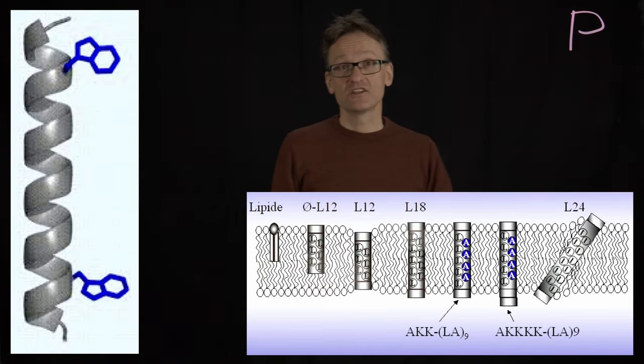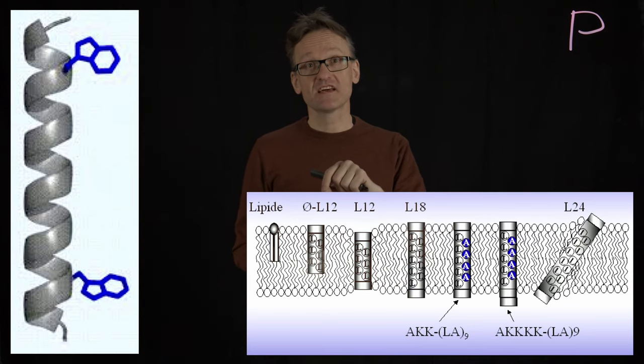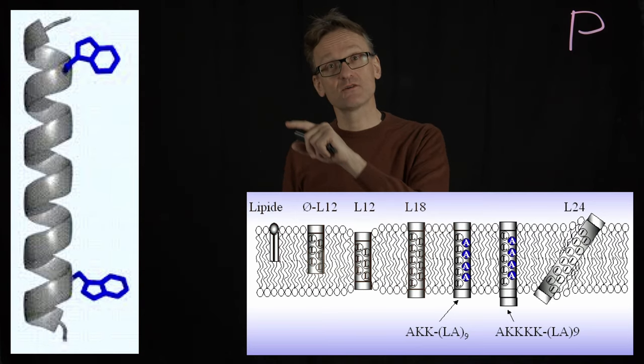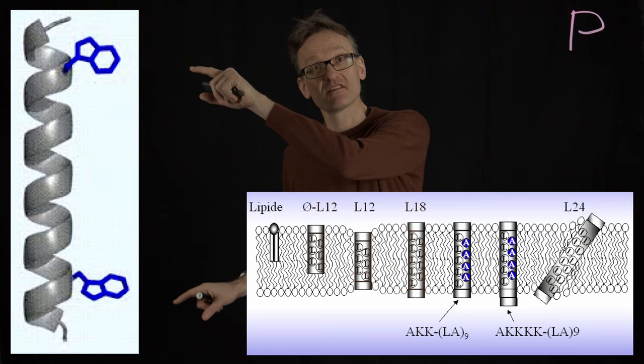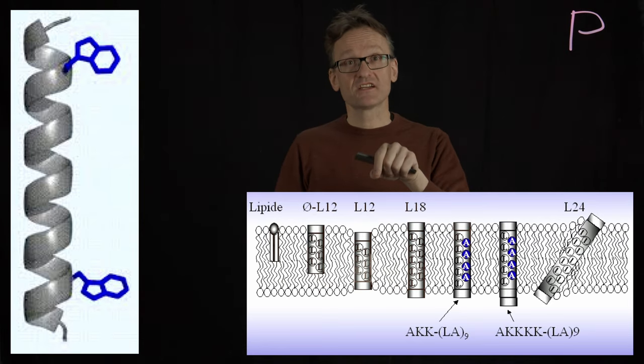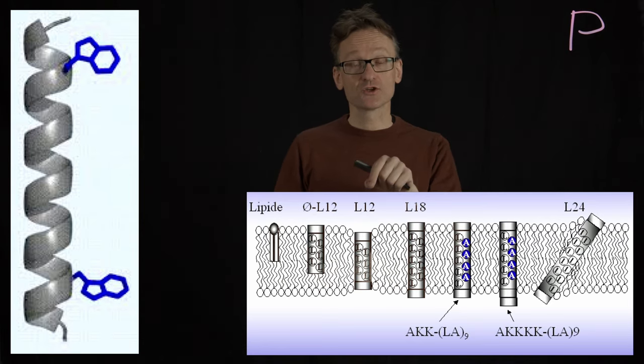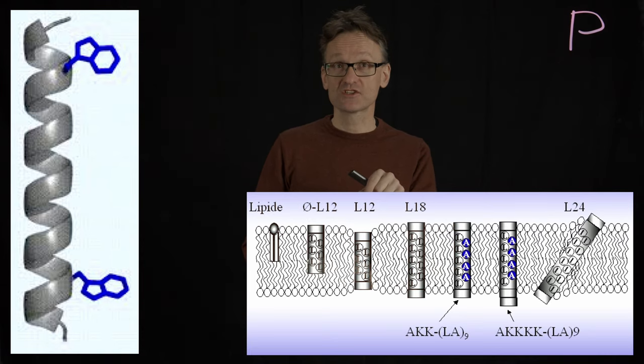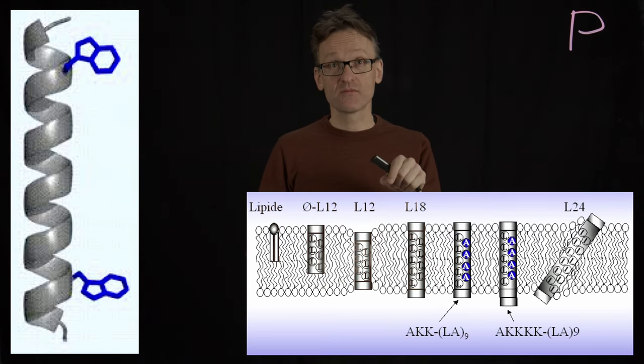They looked at the length distributions of helices, and that's how they saw that in particular with the anchors, the tryptophans, you can actually get helices that are surprisingly short, maybe just 12 residues long, and still go straight through the membrane.